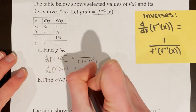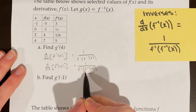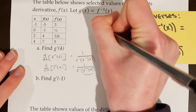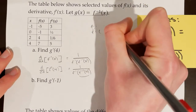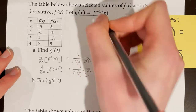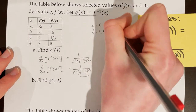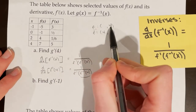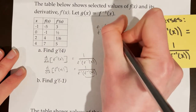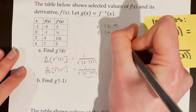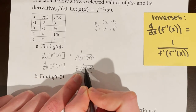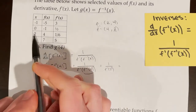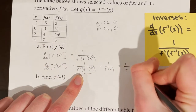Now I plug in 4. First I need to find f inverse of 4. I find it helpful to list the points of regular f and the inverse of f. On the inverse, the x and y coordinates are swapped, so I'm looking for a point on the original f where the y coordinate is 4. That occurs when x equals 2, giving the point (2, 4) on regular f, and therefore (4, 2) on f inverse. So f inverse of 4 equals 2, giving 1 over f prime of 2. From the table, f prime of 2 is 1 sixth. So the answer is 1 over 1 sixth, which equals 6.